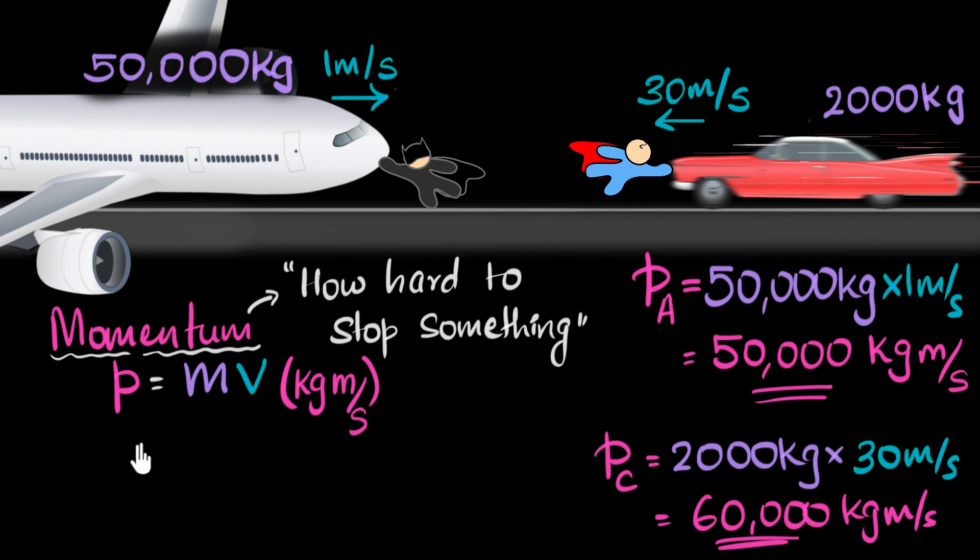And so what did we learn in this video? We learned of a new quantity called momentum. We can think of it as a number which tells us how hard it is to stop something. More momentum, harder it is to stop. And we also learned how to calculate it.